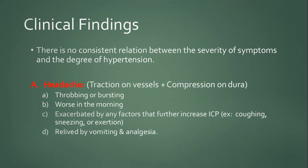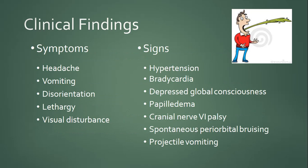Regarding clinical findings, there is no consistent relationship between severity of symptoms and degree of intracranial hypertension. The most common symptom is headache, caused by traction on vessels or compression of the dura. It is typically throbbing or bursting, worse in the morning, exacerbated by factors that increase ICP such as coughing or sneezing, and may be relieved by vomiting. Associated symptoms include vomiting, disorientation, lethargy, and visual disturbances. Signs include hypertension, bradycardia, depressed consciousness, papilledema, cranial nerve palsies (especially sixth nerve palsy), spontaneous periorbital bruising, and projectile vomiting.